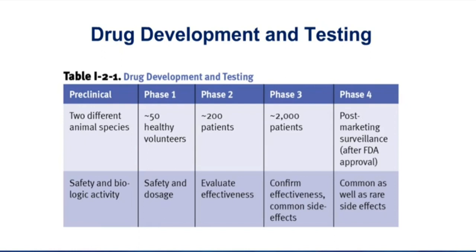Phase two trials are typically the first time we're going to test the drug in patients. The numbers go up — now we're talking about hundreds of folks involved in a phase two trial. Since we're dealing with patients, we can evaluate effectiveness. Phase two is typically the first time we test for efficacy. What phase of clinical trials do most drugs fail? The answer is phase two. Most drugs that enter clinical trials will fail in phase two, and if they fail in phase two, typically that is the end of that drug.